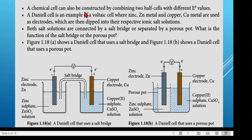Chemical cells can also be constructed by combining two half cells with different enode values. A Daniel cell is an example of a voltaic cell where zinc metal and copper metal are used as electrodes, dipped into their respective ionic solutions. The zinc electrode is dipped into zinc sulfate solution and the copper electrode into copper sulfate solution. The two half cells are combined and connected by a salt bridge, with a voltmeter connected through a wire.